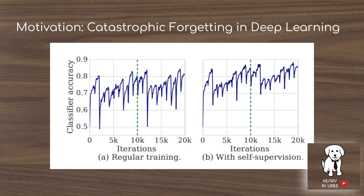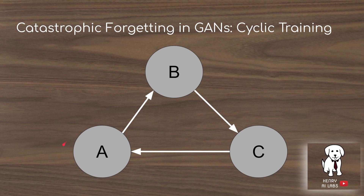The motivation for this is catastrophic forgetting in deep learning. This image isn't from a GAN — it's from a classifier. They train the model on classifying one class from the CIFAR-10 dataset and then switch the class. Every time they switch the classes you see a downward spike, as the classifier no longer has the right representations to classify those images — for example, going from cats to dogs.